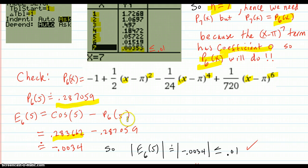So the error between them is going to be the subtraction. And that comes out negative 0.0034. And that absolute value is definitely less than or equal to 0.01. So it verifies out.